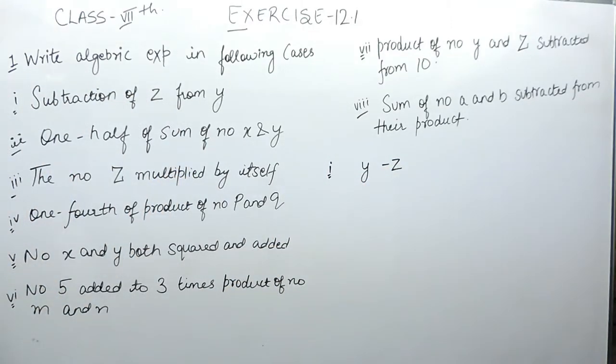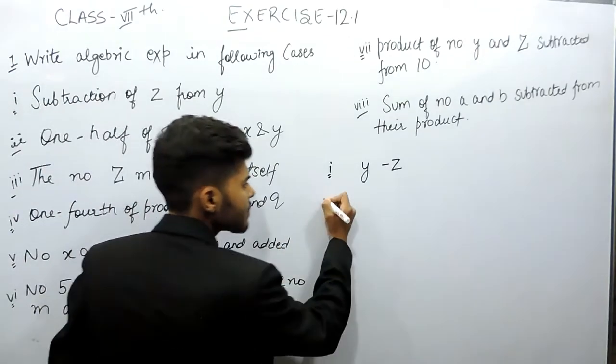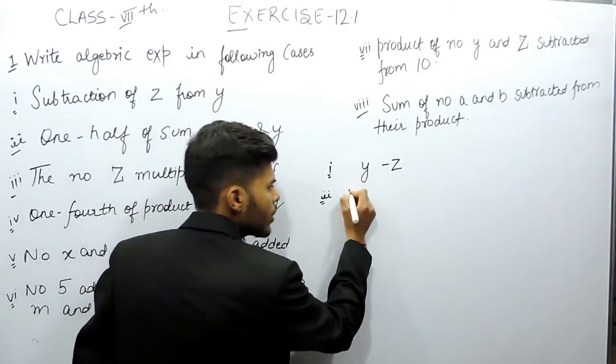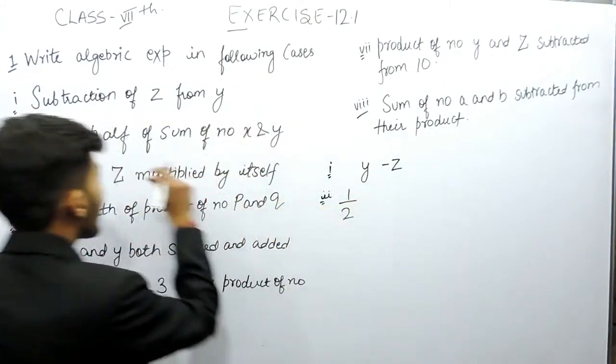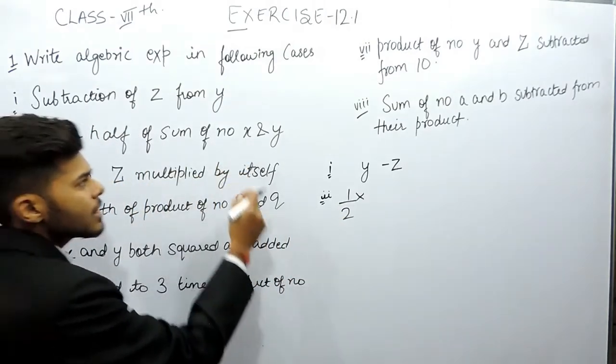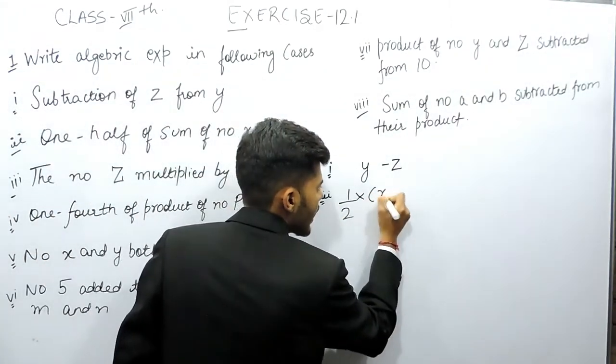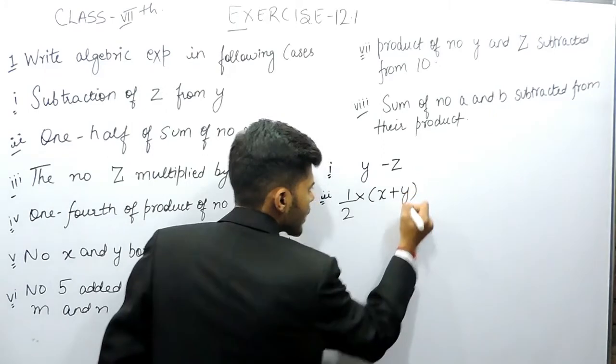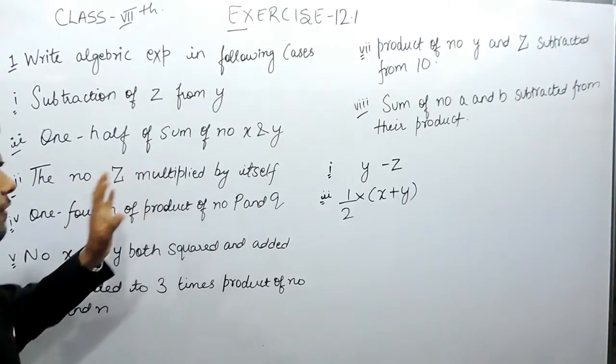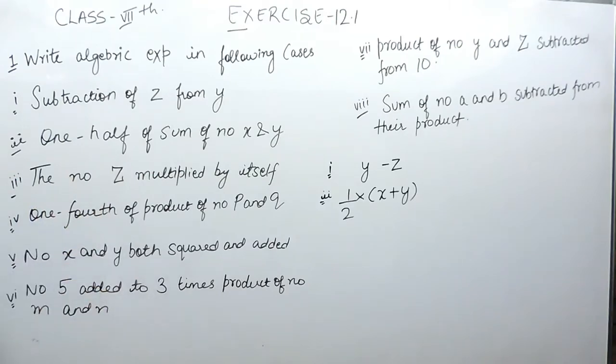In part 2 it says one half of sum of numbers x and y. So one half means one by two. Then 'of' means multiplication. Sum of numbers x and y, so x plus y. Basically we can break down these statements in different parts and then we can solve them.